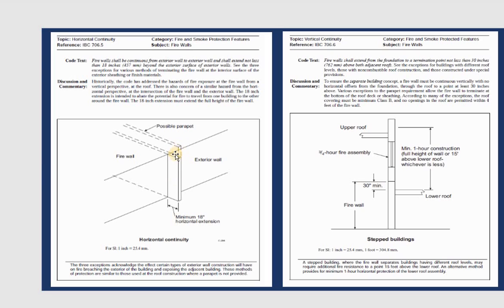The parapet on top can be three feet high, and its function is to slow fire spread from building to building and within the building. If you look at a section of a step building — meaning a building with multiple levels — you see a lower roof and an upper one. Between them, you should have minimum one-hour construction for the full height wall, or 15 feet above. That means the difference between levels is 15 feet, or you need minimum one-hour construction. If you have an opening in that area, you need minimum three-quarter hour fire assemblies.